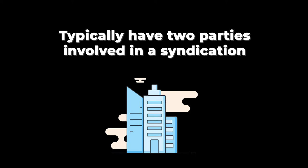Now before we talk about the advantages and disadvantages of syndication, let's break down the structure of who is involved. You typically have two parties involved in a syndication. The first is your general partner, or the GP.